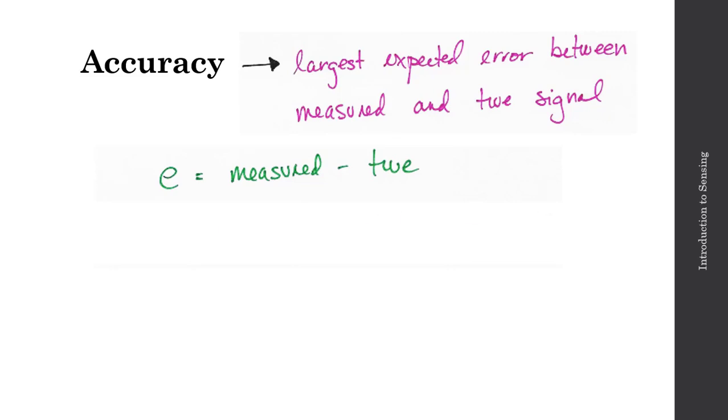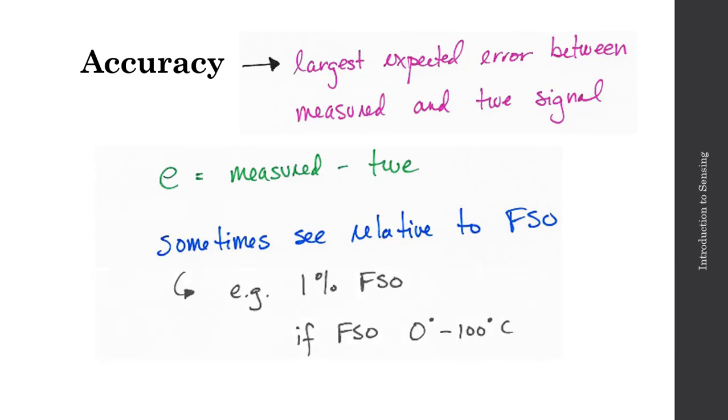On a data sheet, you might see the accuracy relative to the full-scale operating range, relative to the FSO. So, for example, let's say you saw that the accuracy on the data sheet was defined as 1% FSO. And if you knew from elsewhere on that same data sheet that the FSO was 0 to 100 degrees C, let's say this is a temperature sensor, then I would expect my accuracy, or that largest expected error, to be plus or minus 1 degrees C.